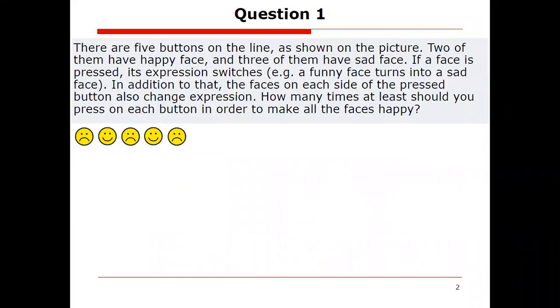Let's jump straight into it. There are five buttons on the line as shown in the picture. Two of them have a happy face and three of them have a sad face. If a face is pressed its expression switches, so a funny face will turn into a sad face, and sad face will turn into a funny face. In addition to this, the faces on each side of the pressed button also change their expression. How many times at least should you press on each button in order to make all the faces happy? And what would your strategy be?